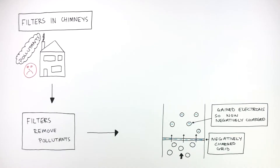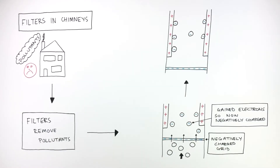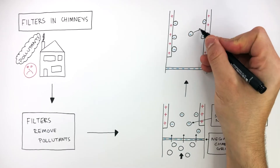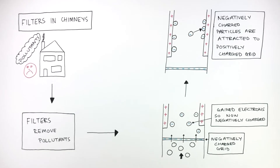On the walls of the chimney are positively charged grids. The negatively charged particles are then attracted to the positively charged grids in the chimney, which removes the pollutants from the chimney before they can leave the house.